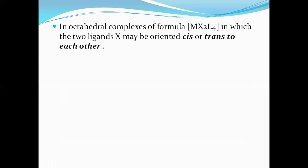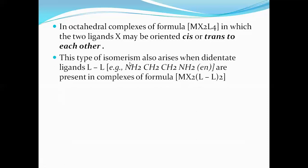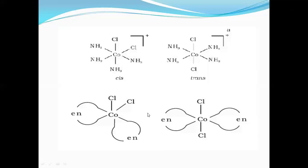In octahedral complexes, cis and trans isomerism also exists. The ligands present in the minimum number determine cis and trans: if they are adjacent to each other, it is cis; if on opposite sides, it is trans. Cis and trans also exist with bidentate ligands such as ethylenediamine and oxalate. For example, in cobalt tetramine dichloride: when two chlorine atoms are adjacent, it is called cis; when they are on opposite sides, it is called trans. The chloride ions, not the bidentate ligands, decide the cis/trans designation.